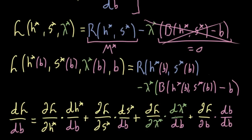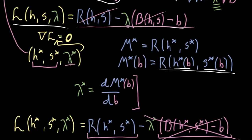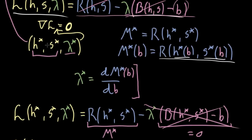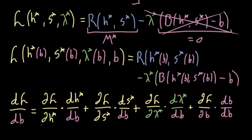This might seem horrifying to compute — you'd have to know how lambda* changes as b changes, and that's such an implicit relationship. But you don't have to worry, because by definition h*, s*, and lambda* are whatever values make the gradient of L equal to zero. That means the partial derivative of L with respect to h* equals zero, the partial derivative with respect to s* equals zero, and the partial derivative with respect to lambda* also equals zero.